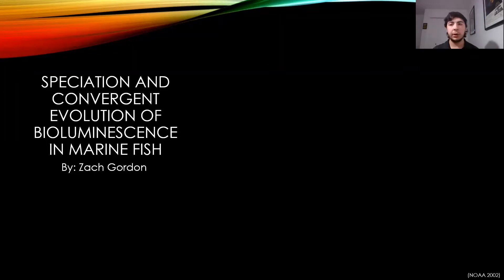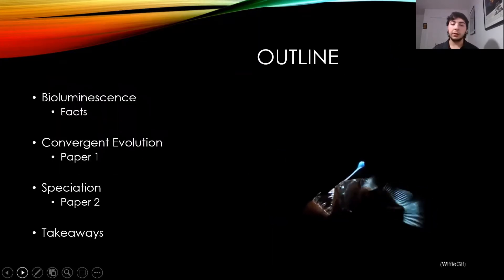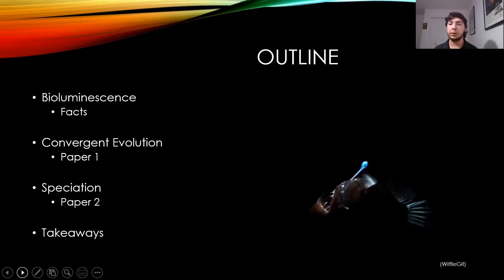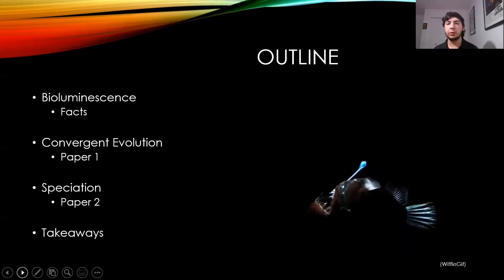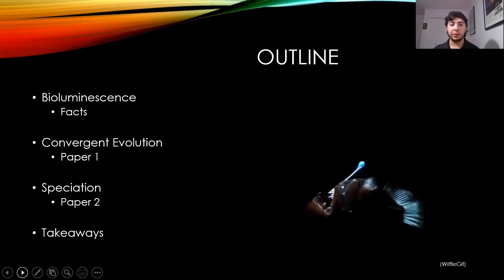Hello everyone, my name is Zach Gordon and the talk I'm giving today is called Speciation and Convergent Evolution of Bioluminescence in Marine Fish. The outline for this presentation starts with bioluminescence — what it is, facts about it, and the characteristics of organisms. Then I will go into convergent evolution and talk about the first paper I read, then move to speciation and the second paper. I'll end the talk with the takeaways.